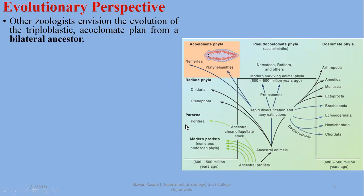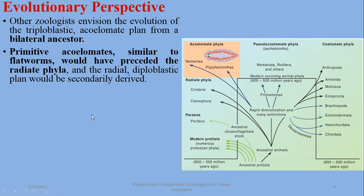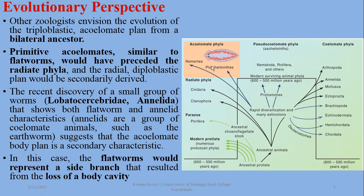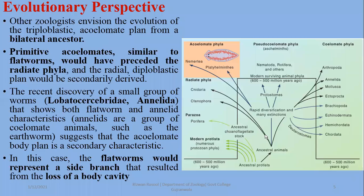Other zoologists envision that evolution of the triploblastic acoelomate plan came from a bilateral ancestor. In this view, primitive acoelomates similar to flatworms would have preceded the radiate phyla. A recent discovery of a small group of worms called Lobatocerebridae — an annelid group showing both flatworm and annelid characteristics — suggests that the acoelomate body plan may be a secondary characteristic, and that bilateral symmetry is the primary one. Flatworms may represent a side branch resulting from the loss of a body cavity.